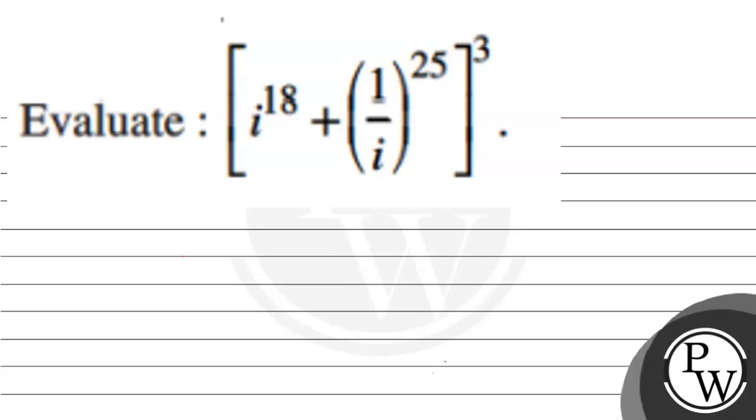Hello, Bacho. Let's first read the question. The question says to evaluate the given expression. In the given expression, when we break it, we have: in bracket, i raised to 18 plus in bracket 1 upon i entire raised to 25, and the entire bracket raised to 3.